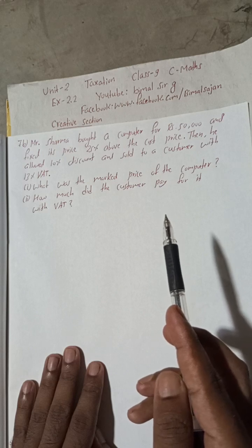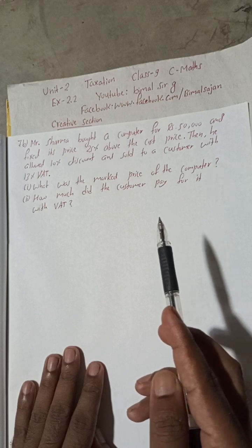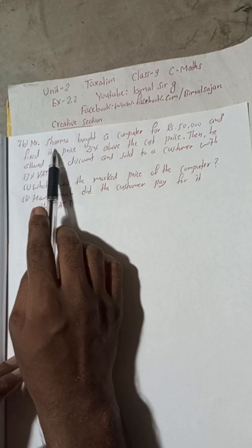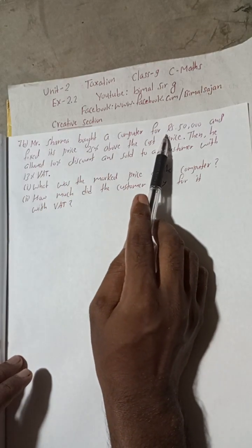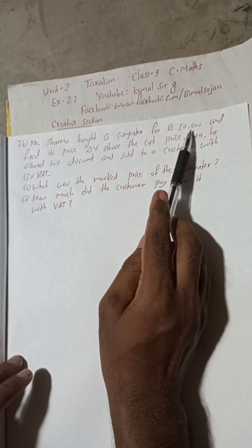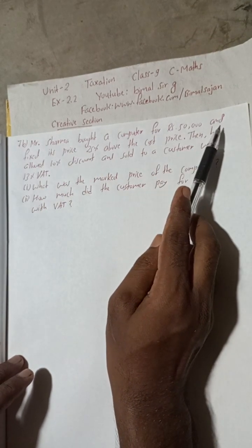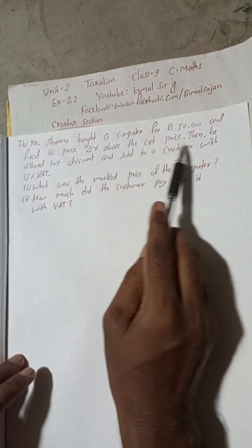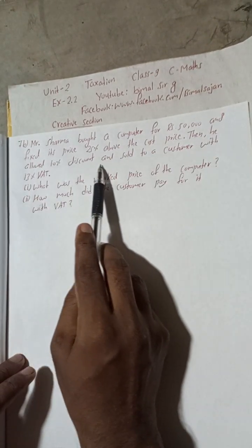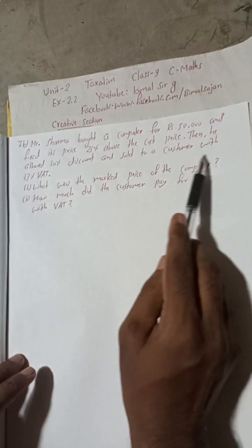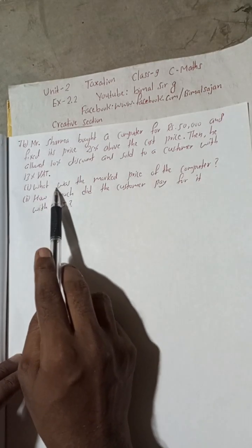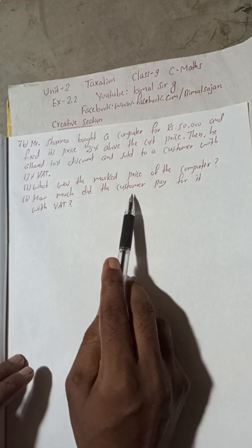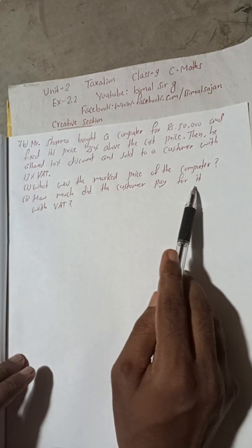Let's begin the solution. Question 7b: Mr. Sarma bought a computer for Rs. 50,000 and fixed its price 20 percent above the cost price. Then he allowed 10 percent discount and sold to a customer with 13 percent VAT. What was the marked price of the computer? How much did the customer pay for it with VAT?